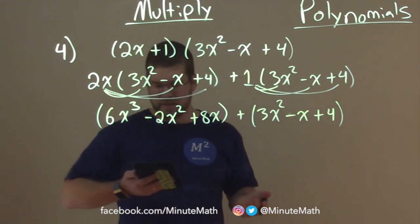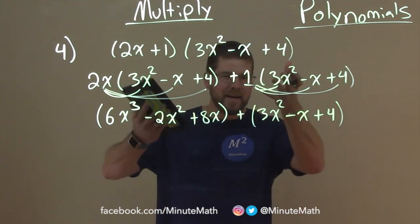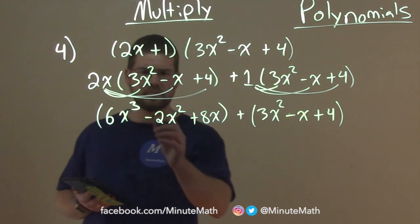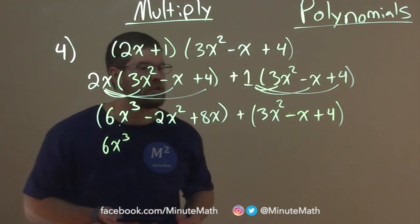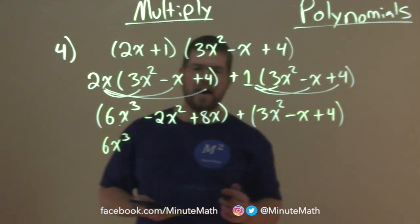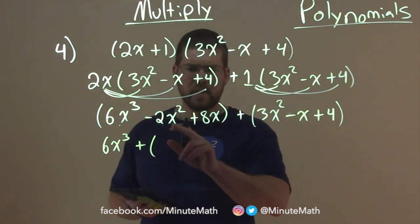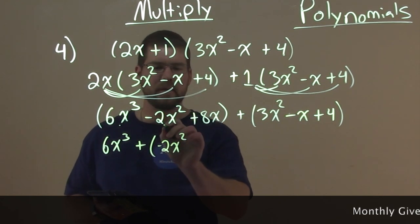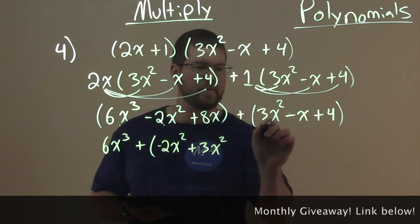So now we want to combine our like terms like we've done before. Highest degree first, work our way down. And I'm going to show all the steps here, but you probably will get to a point where you don't have to. Highest degree is 6x to the third. Put a dot to show that I've used that term. Nothing else has any higher degree. So let's move down. We want to add here. Next highest degree is squared. So we have negative 2x squared. Put a dot there. And we have 3x squared here. Plus 3x squared.